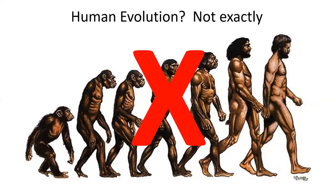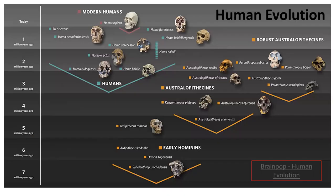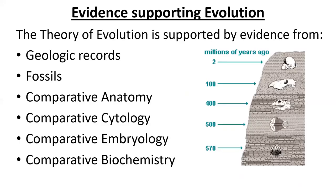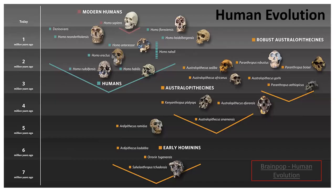Another common misconception: if you search evolution on the internet, you're going to get this picture of human evolution over and over again. This is a misconception because it's depicting that we have come from modern day chimpanzees, which is not the case. We do have a common ancestor with modern day chimpanzees — we did not come from modern day chimpanzees. There will be something next week where you work through the details of human evolution using the Smithsonian website.